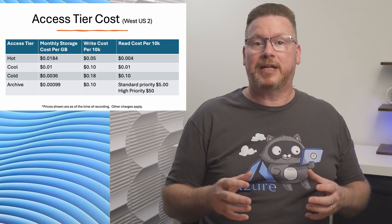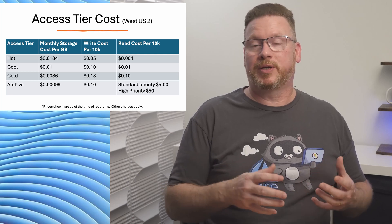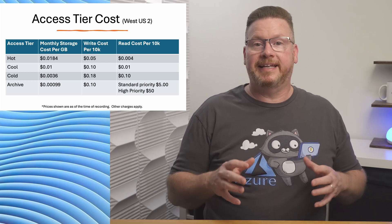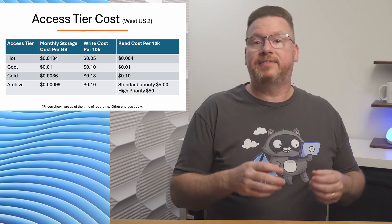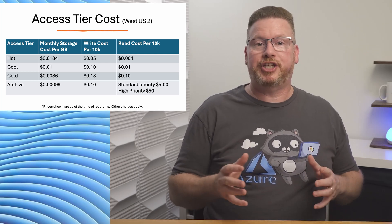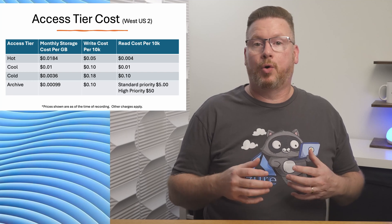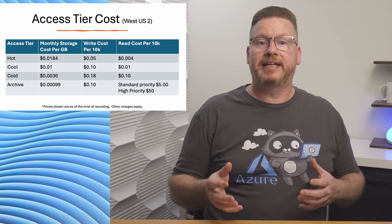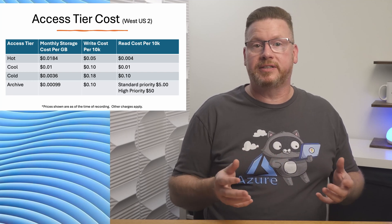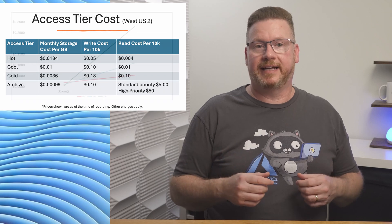High-priority takes precedence over standard and could recover data in less than an hour. Data in the archive tier can be rehydrated by changing the archive blob to an online tier, or the archive data can be copied to a new hot or cool tier, leaving the archive tier intact.